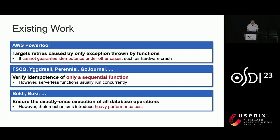There is some prior work to address this problem. AWS provides Power2 to ensure idempotence automatically. However, this tool only considers the retry caused by exceptions thrown by functions; it cannot guarantee idempotence under other cases such as hardware crash or network problems. Verification frameworks such as FSCQ can verify idempotence of sequential functions, but service functions usually run concurrently. Other work such as Beldi and Boki can ensure exactly-once execution of all database operations so the whole function runs exactly once, but their mechanisms introduce heavy performance cost.